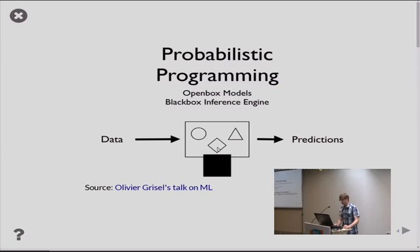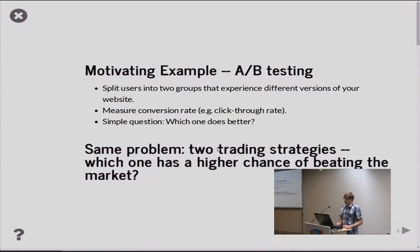So throughout this talk, I want to use a very simple example that most of you will be familiar with, and that is A-B testing. As you know, when you have two websites and you want to know which one works better and some measure that you're interested in, maybe the conversion rate or how many users click on an ad, what do you do to test that? So you split your users into two groups and give group one website A and give group two website B, and then you want to look which had the higher measure.